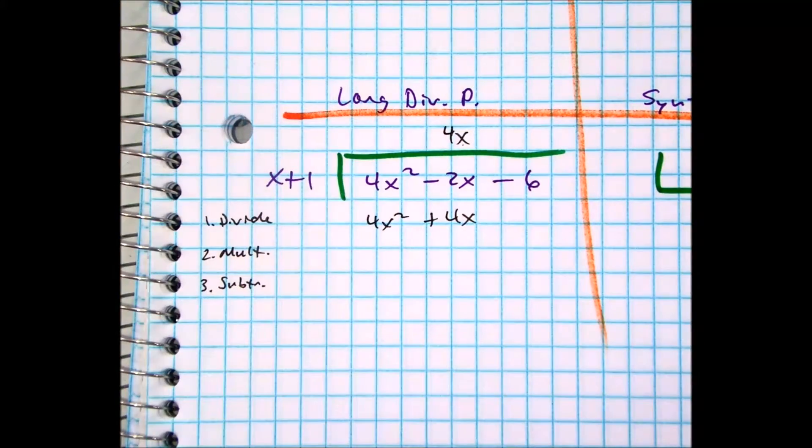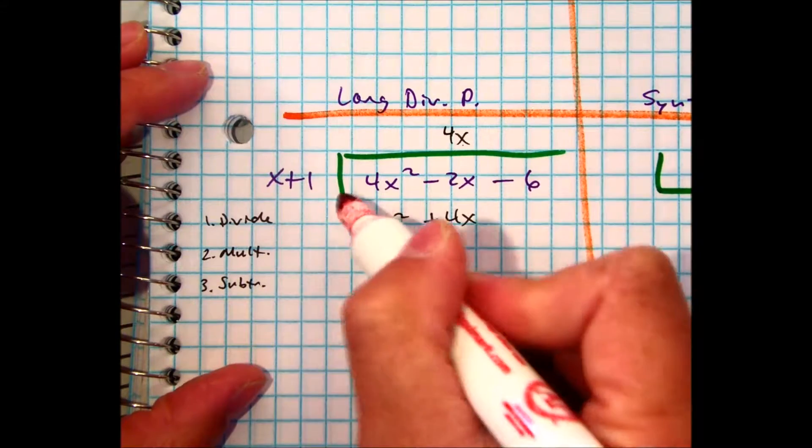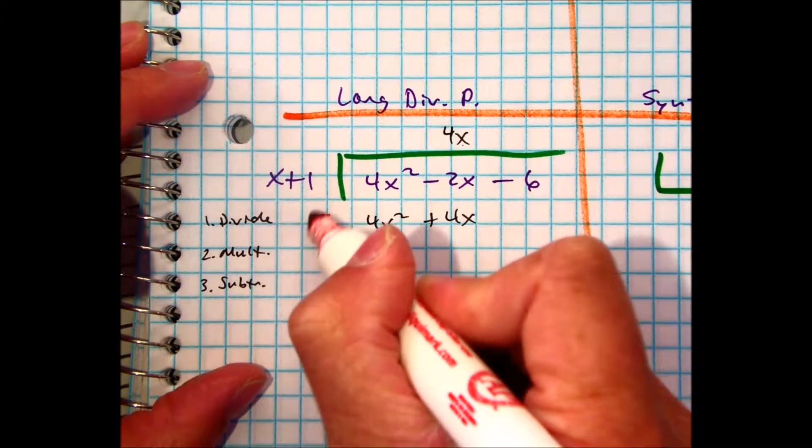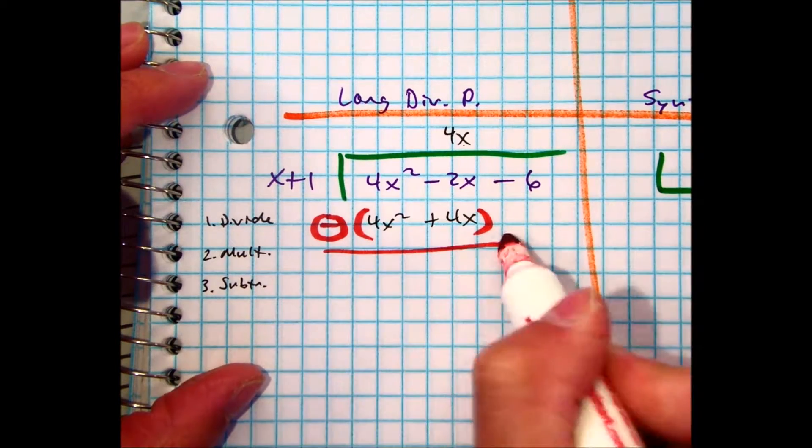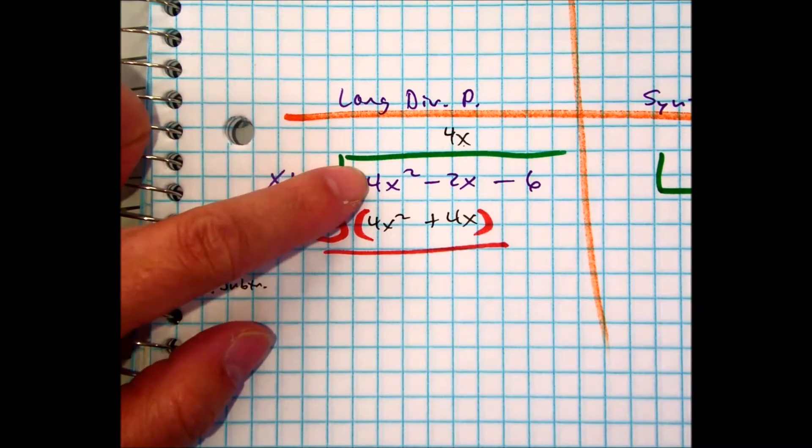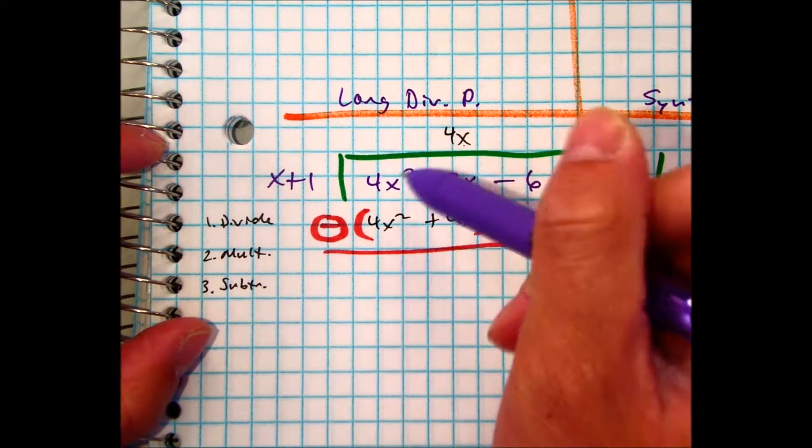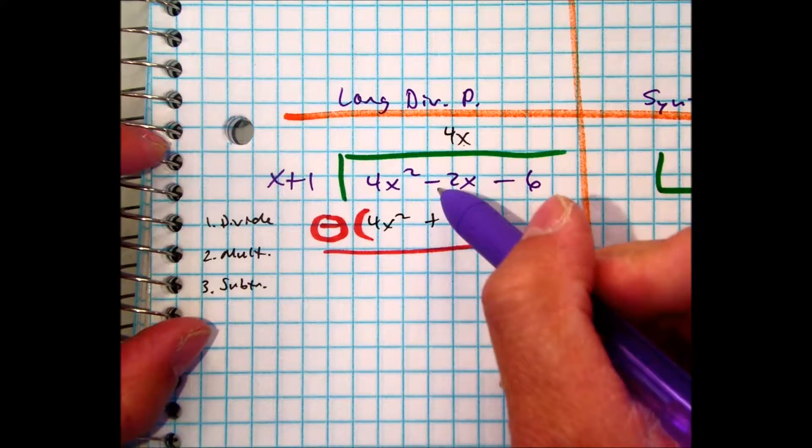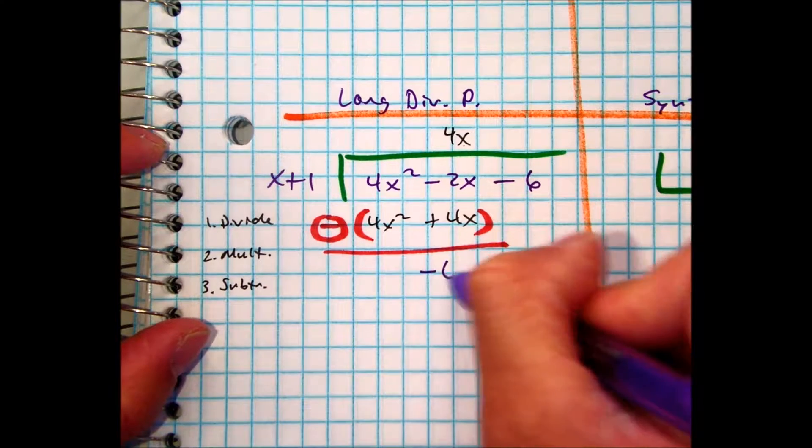We're going to subtract. So a lot of you guys had some issues with this subtraction here, so I like to put the minus sign, circle it, and put that in parentheses. Class, what's 4 minus 4? That's 0. And then negative 2 minus 4 is negative 6x.